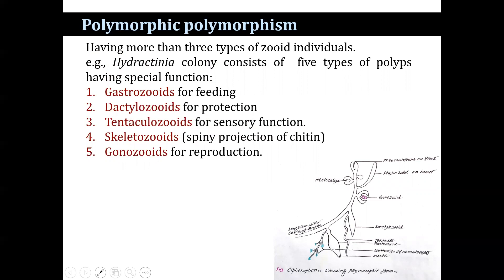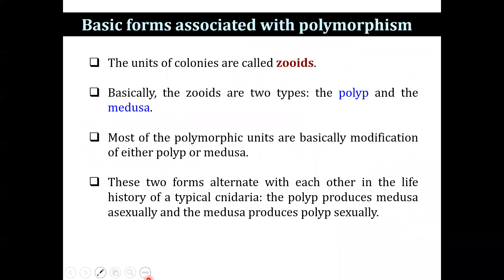The basic forms associated with polymorphism — the units of the colony — are the zooids. Basically, zooids are of two types: polyp and medusa. Most of the polymorphic units are basically modifications of either the polyp or the medusa. These two forms alternate with each other in the life history of a typical cnidarian. The polyp produces medusa asexually, and the medusa produces polyps sexually.